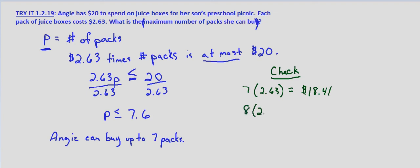8 times $2.63 equals $21.04, which would be too much since she only has $20. So this verifies that Angie can buy 7 packs or less, up to 7 packs of the juice boxes.